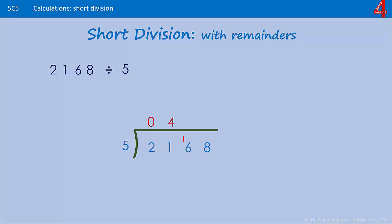Five into 16: three lots of five is 15 and there's one left over. Five into 18, this is where we're going to have something left. Five will go into 18 three times. Three times five is 15.